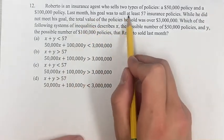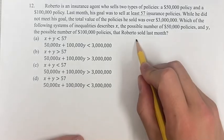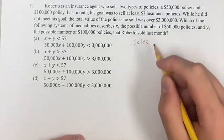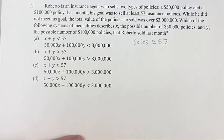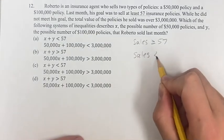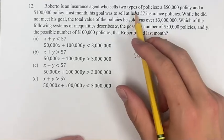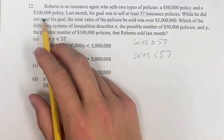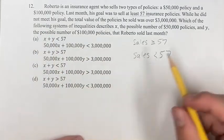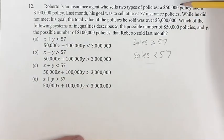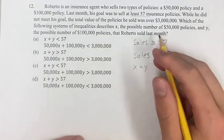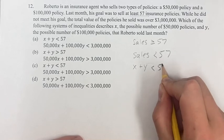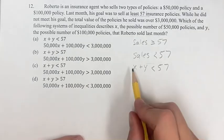We're told that his goal was to sell at least 57, meaning he wanted his sales to be greater than or equal to 57. But we're told he did not meet his goal, so the actual sales were less than 57. If he had two types of policies — the $50,000 policy and the $100,000 policy — the total sales are x plus y. So x plus y was less than 57. That's going to be our first inequality.